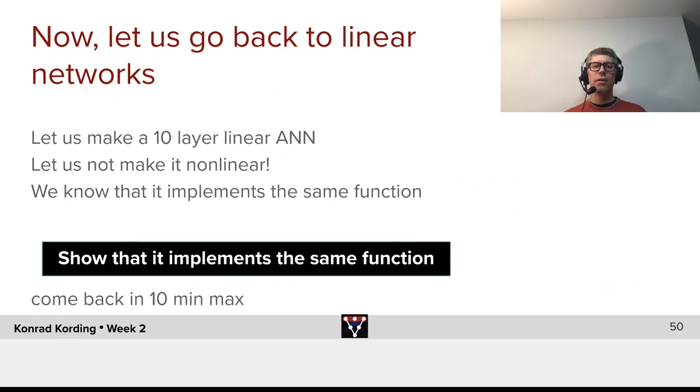We take a 10-layer neural artificial neural network. We will not make it non-linear, not like the previous exercise, not on purpose making it non-linear. We'll leave it in the domain where the abstraction is good.